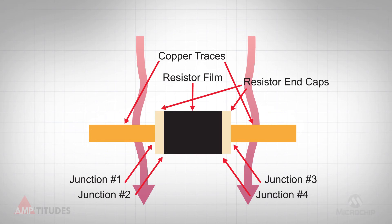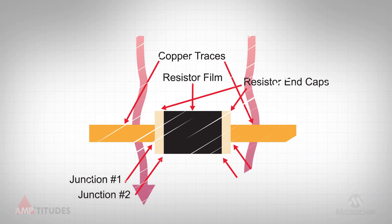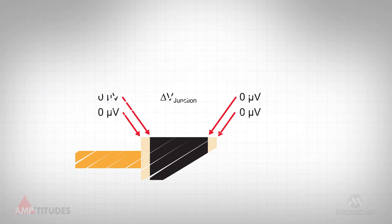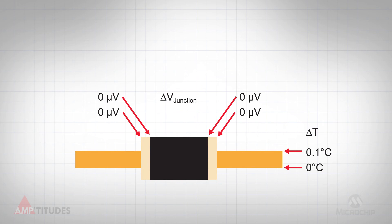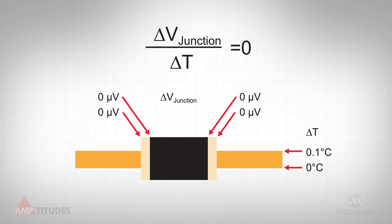Now let's examine a case in which the temperature gradient is perpendicular to the trace, as opposed to parallel, as shown in the previous case. Since the copper traces and the resistor ends are all at the same temperature, there is no error due to the thermal junctions.